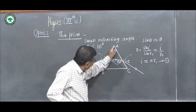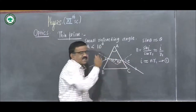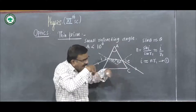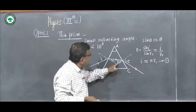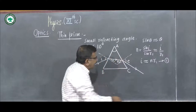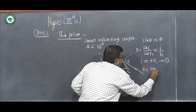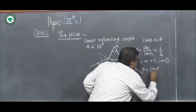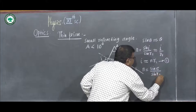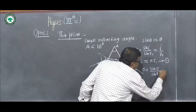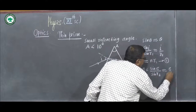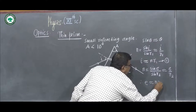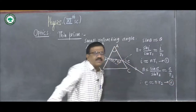If we consider the second refracting surface, if the direction of the ray of light is reversed, the emergent ray will be here. This e will be i, that is the angle of incidence, and this is the angle of refraction. We write the equation as n = sin e upon sin r2. As the angles are small, sin e ≈ e and sin r2 ≈ r2. Hence we get e = n·r2.